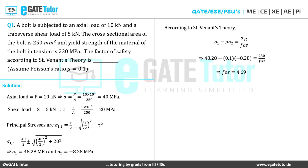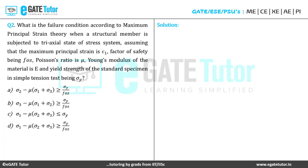Let's look at question 2: What is the failure condition according to maximum principal strain theory when a structural member is subjected to a triaxial state of stress system? The maximum principal strain is ε₁, factor of safety is FOS, Poisson's ratio is μ, Young's modulus is E, and yield strength of the standard specimen in simple tension is σ_y. We have to write down the failure condition for three-dimensional loading.